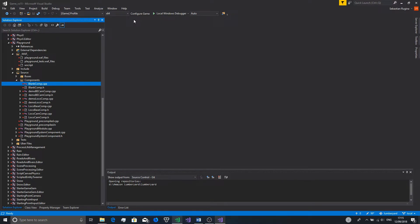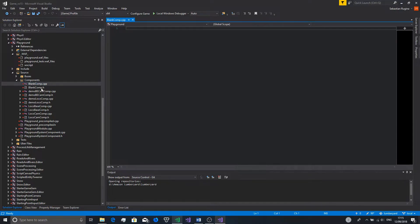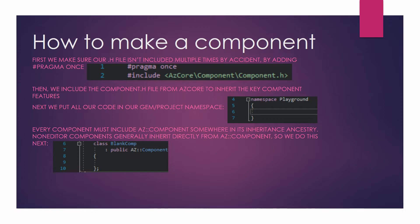Once you've reloaded your solution, open up the .cpp file and the .h file, and we'll get started programming in the .h file. First, make sure your .h file isn't included multiple times by accident by adding #pragma once. Then include the component.h file from AZCore to inherit the key component features. Next, put all your code in your gem or project namespace by doing namespace [project/gem name] and then brackets.